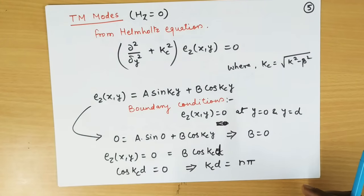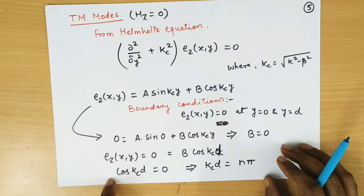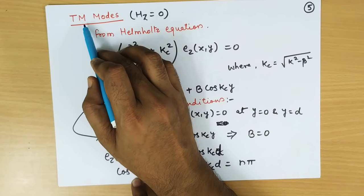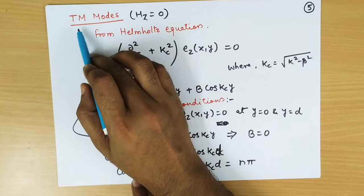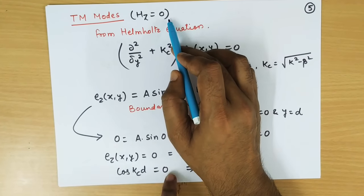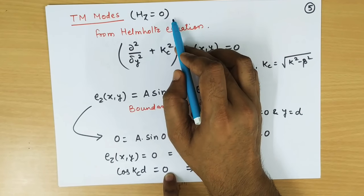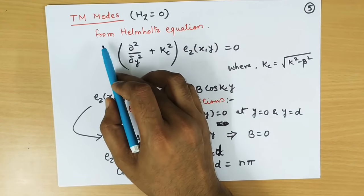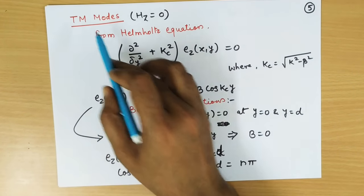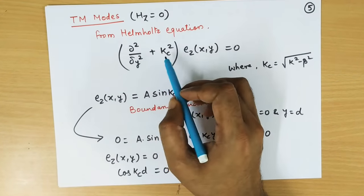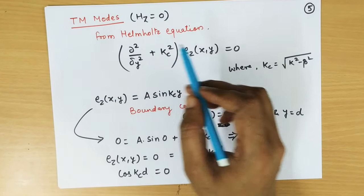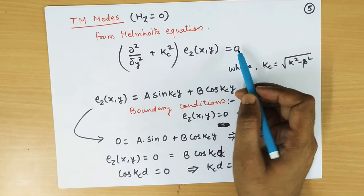Now let us take the TM mode. TM mode means transverse magnetic mode, meaning all the magnetic fields are transverse, so there is no longitudinal magnetic field. That means H_Z equals 0. From the Helmholtz equation, we know that for TM mode, the Helmholtz equation is written as d²/dy² plus k_c² times E_Z(x,y) equal to 0.